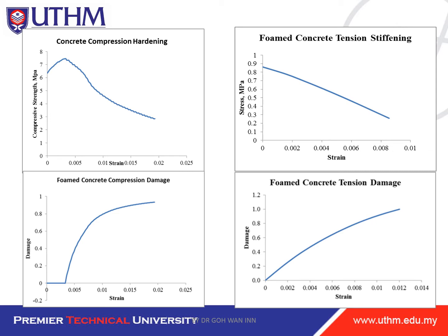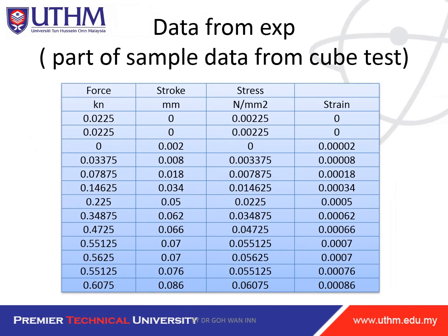From the data we need to obtain the concrete compression hardening, then calculate the foam concrete compression damage. Damage starts after the ultimate load where fracture occurs — before ultimate load there is no damage. For the foam concrete tension stiffness from the split tensile test, the mirror effect removes the front part and we take only from the ultimate strain onward, where damage starts.